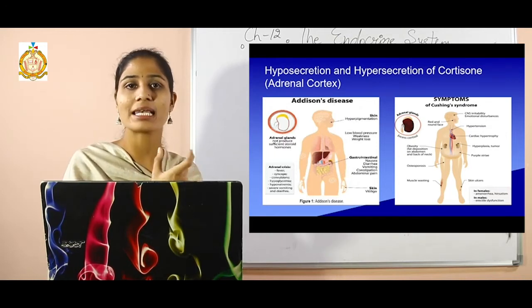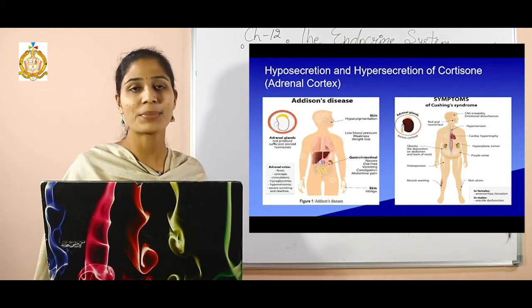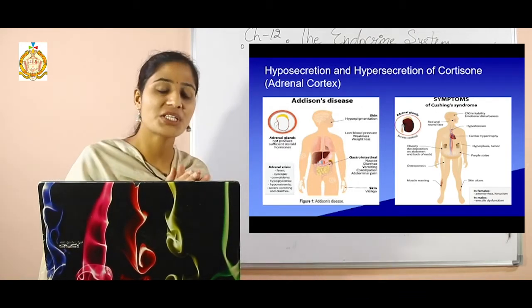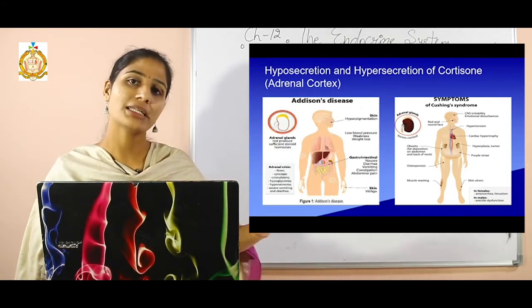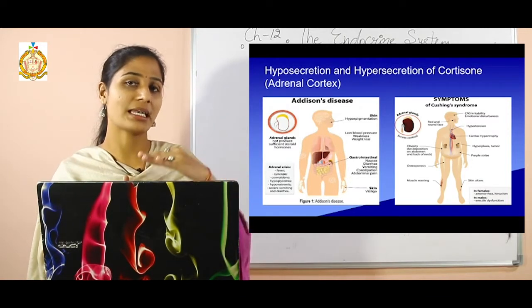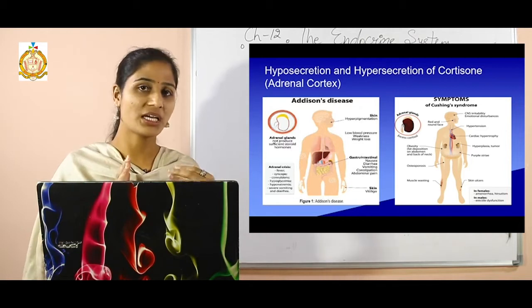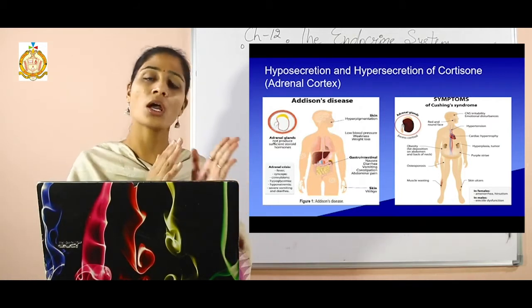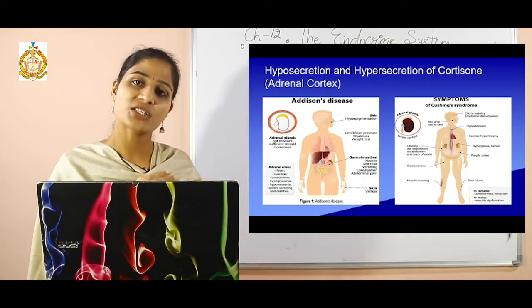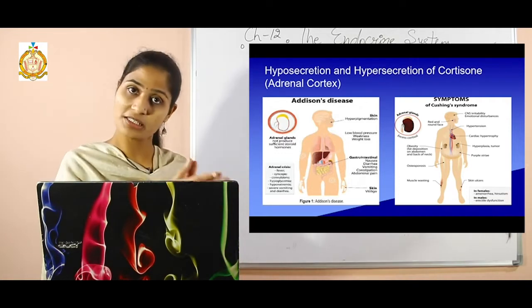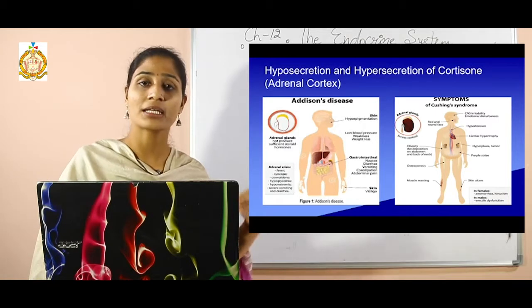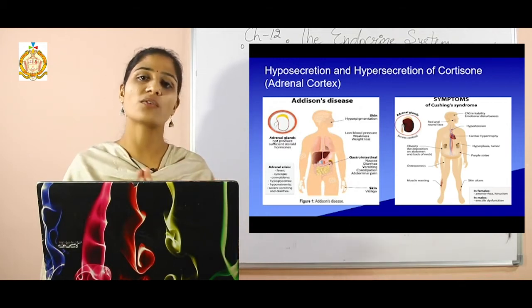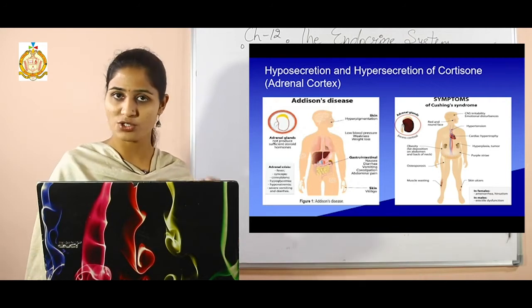Now we discuss hyposecretion and hypersecretion of cortisone. Hypo means less secretion and hyper means more secretion. Just as eating too little or too much food is both harmful, similarly hormonal secretions that are lesser or more than normal are both harmful for our body and lead to disorders. First, hyposecretion — less secretion of cortisone.